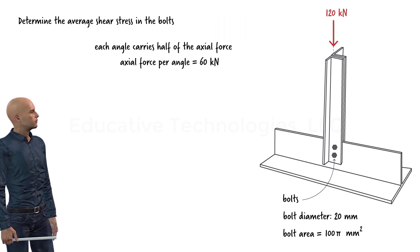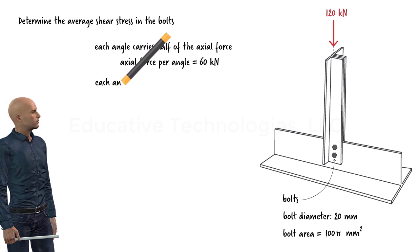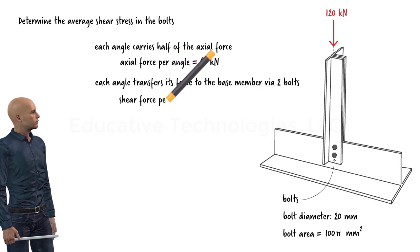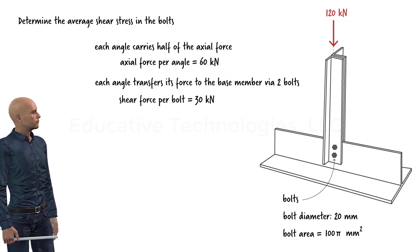Furthermore, each angle transfers its force to the base member through two bolts. Therefore, we can assume that each bolt is responsible for transferring half the 60 kilonewtons force to the base member.